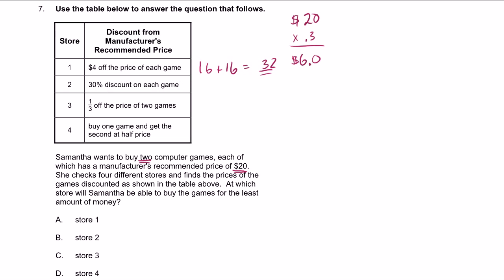So $6 discount. Remember, 30% of 20 is $6. So $6 discount will be $14, 20 minus 6, per game that she buys. So she's going to spend $28 at store number 2. Let's switch colors.